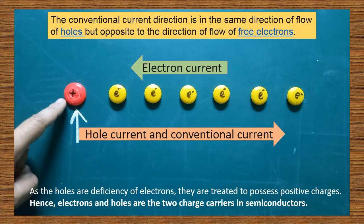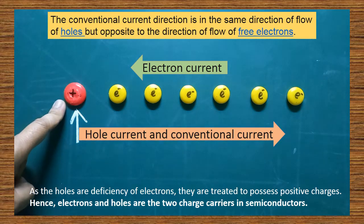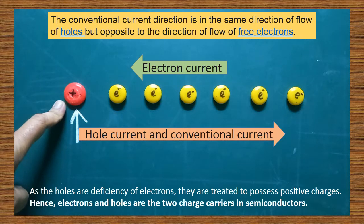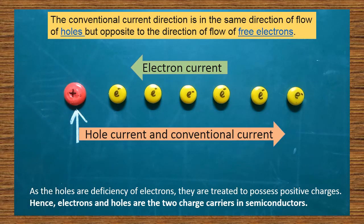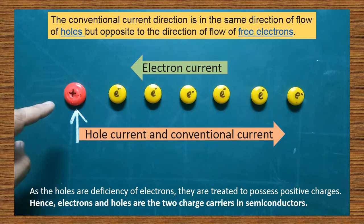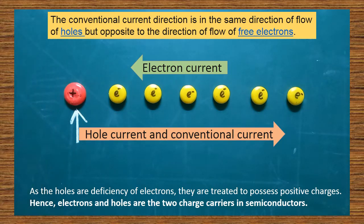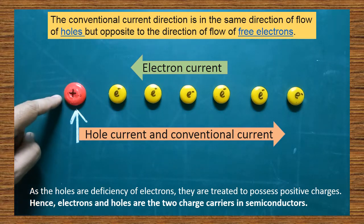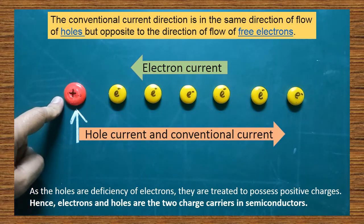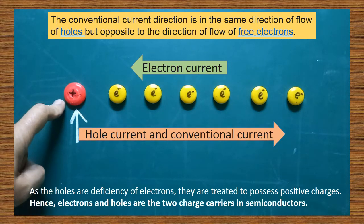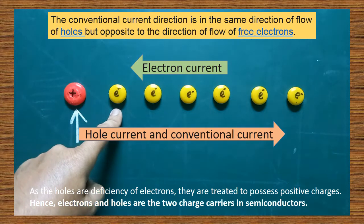We have to assume that the red color one should be assumed as a hole. How are holes created? Holes are nothing but they are created due to the vacancy of electrons. If electrons are present, that position is taken as negative charge. If the vacancy is there due to the absence of an electron, that void, that vacuum, that vacancy must be considered as a positive region, positive charge. So holes are positive charge carriers, but it is a vacancy. Electrons, on the other hand, possess negative charge.